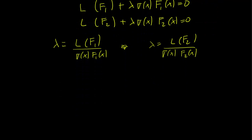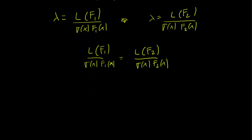So equating the two equations, we get L f1 over sigma x f1x equals L f2 over sigma x f2x. And we can write all this down as L f1 over sigma x minus L f2 over sigma x. All of this is multiplied by sigma x, and this is equal to 0.